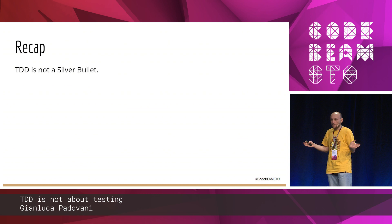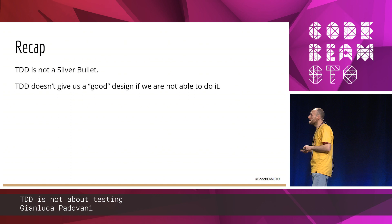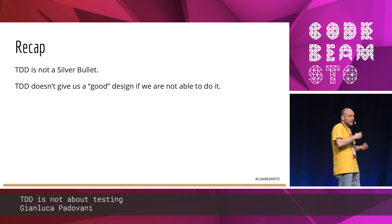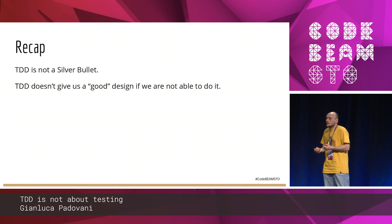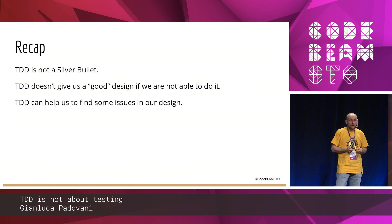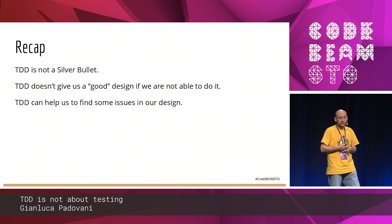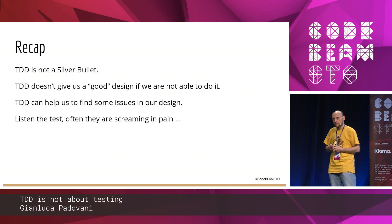Just a recap: TDD is not a silver bullet. TDD doesn't give us a good design if we are not able to do it — it helps us and gives us some hints. The test tells us, but we are in charge. TDD can help us to find some issues — for example, when I see a test with a big, long setup, I say that is a design problem, and this is the problem of the production code. The production code should be changed, not the test, not the tool. Listen to the test — often they are screaming in pain.